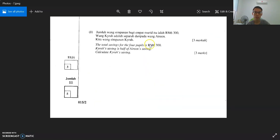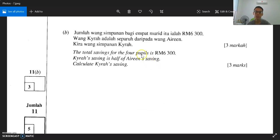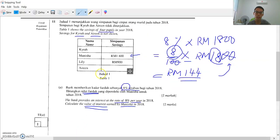Question 2: The total savings for four pupils is RM6300. There are four pupils here, one, two, three, four. Total is RM6300.